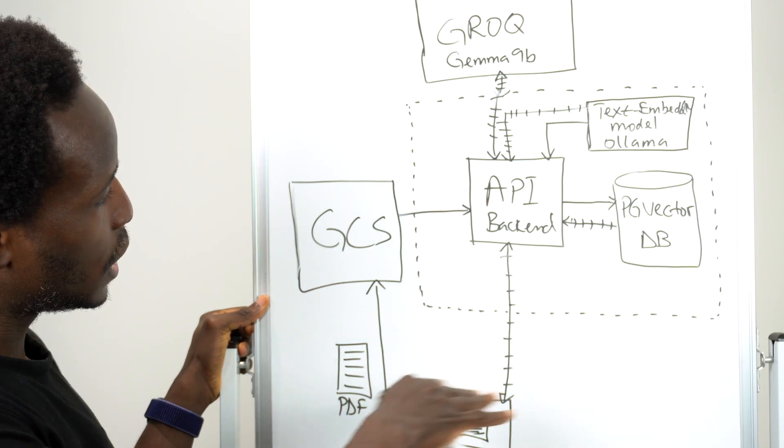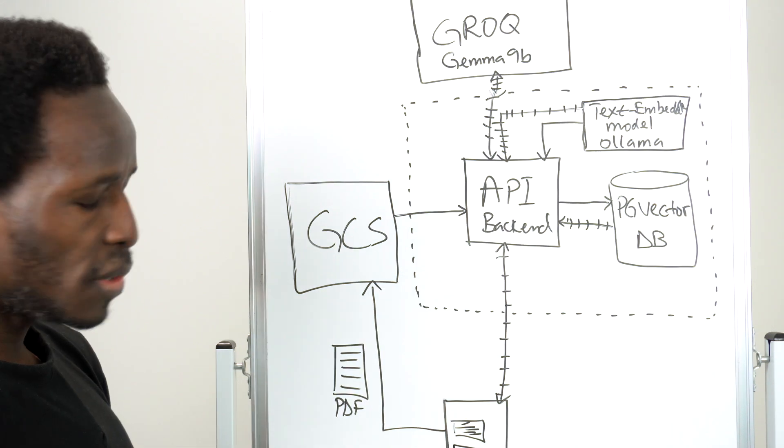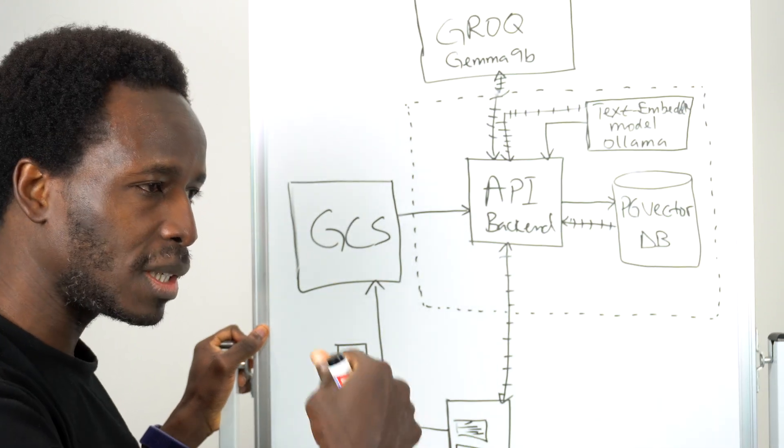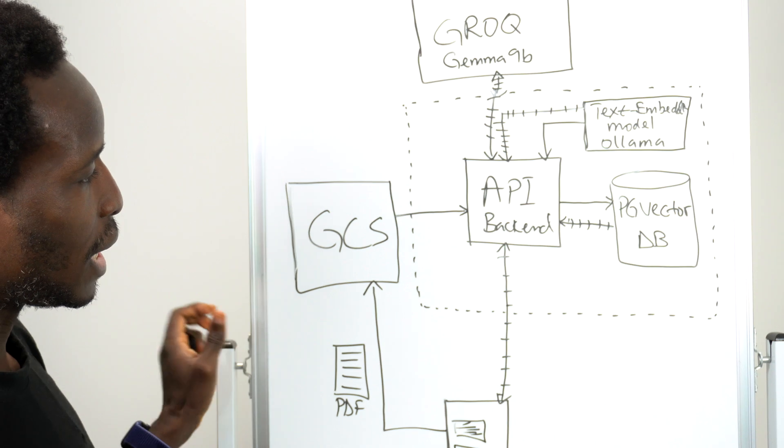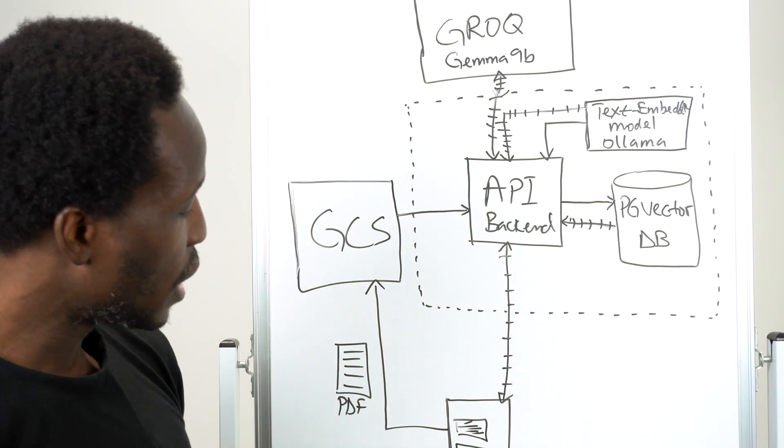So this is a very simple, straightforward architecture. Your API backend will certainly have so many other modules inside it that handle user account creation, document management, because you would have several documents. You want to be able to allow users to view which documents they've uploaded, allow them to add more documents, delete documents. All of that logic would be stored in our API backend here.